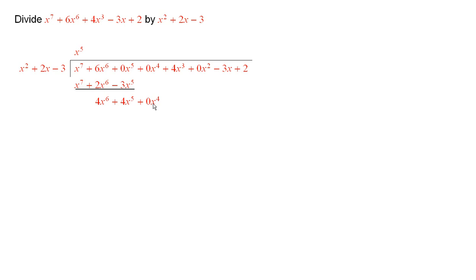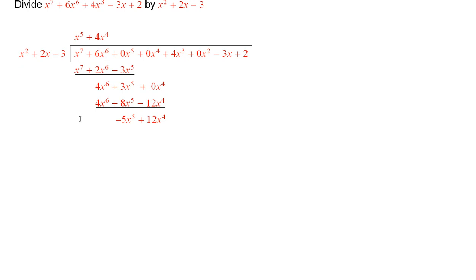So now the next step will be to place the next term up here. And what should it be? Well, it should be 4x to the 4th. So I took 4x to the 4th times this and put it here. Subtracted from this expression. And that gave me minus 5x to the 5th plus 12x to the 4th.